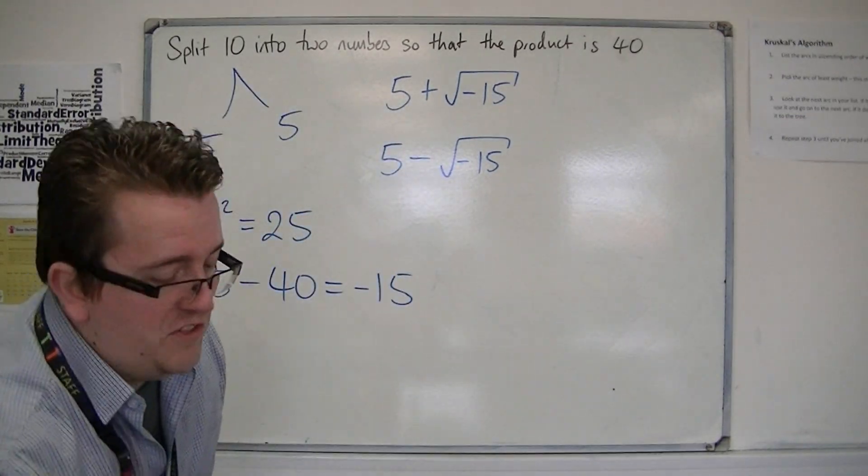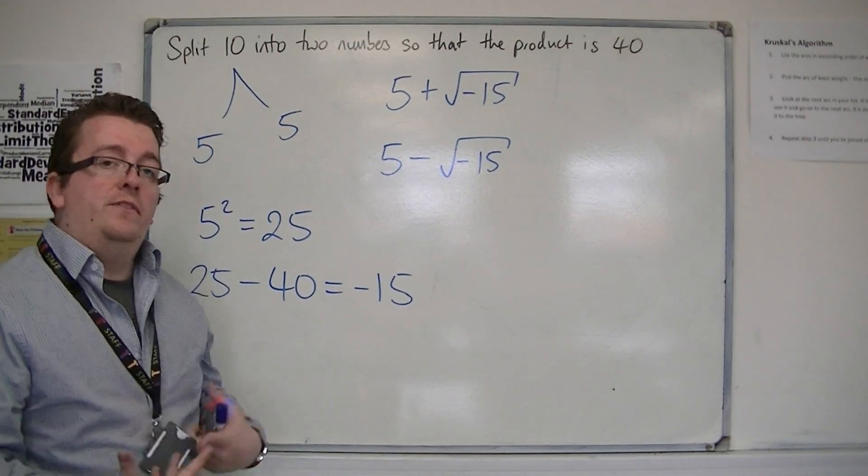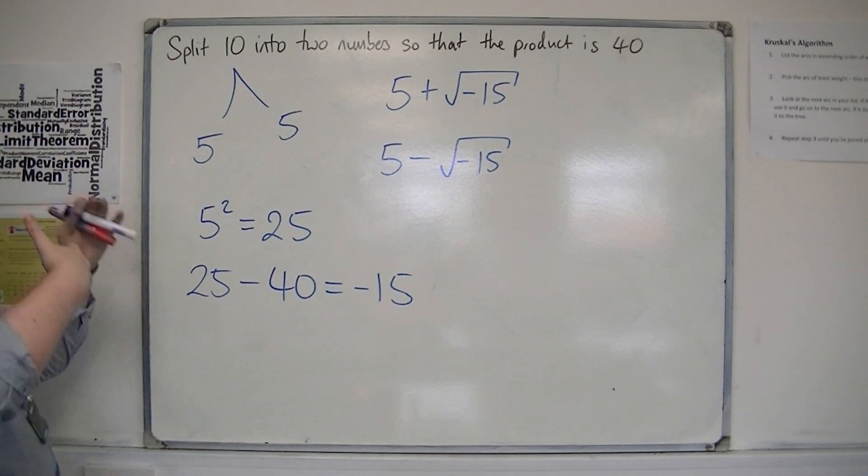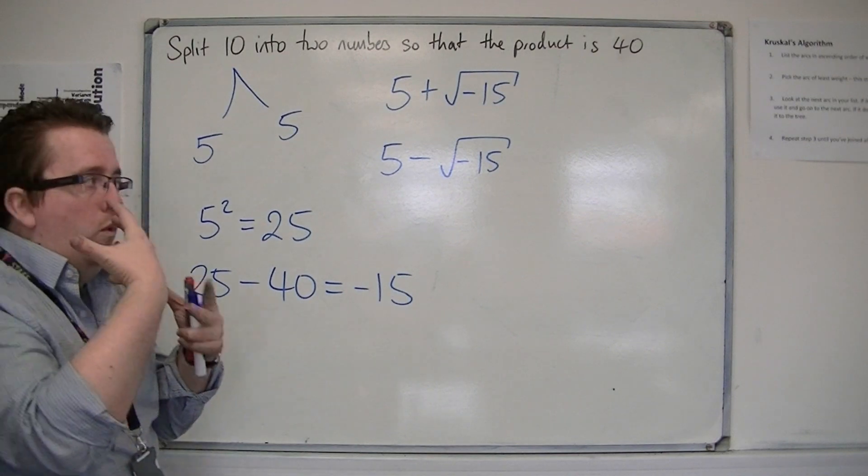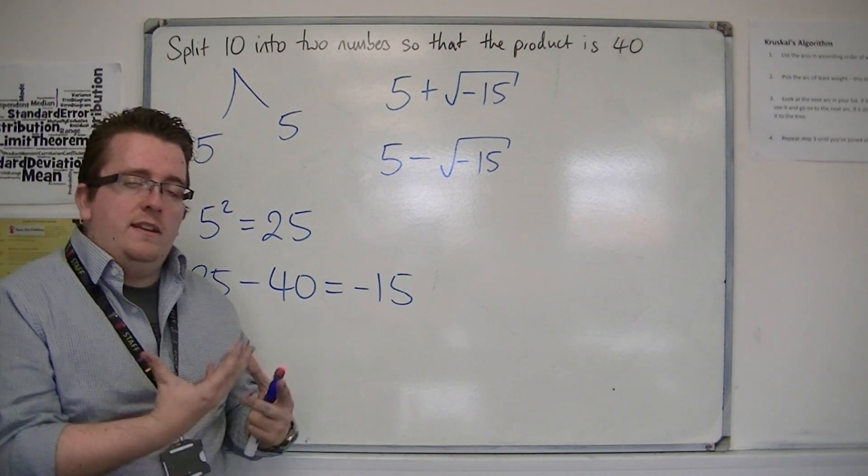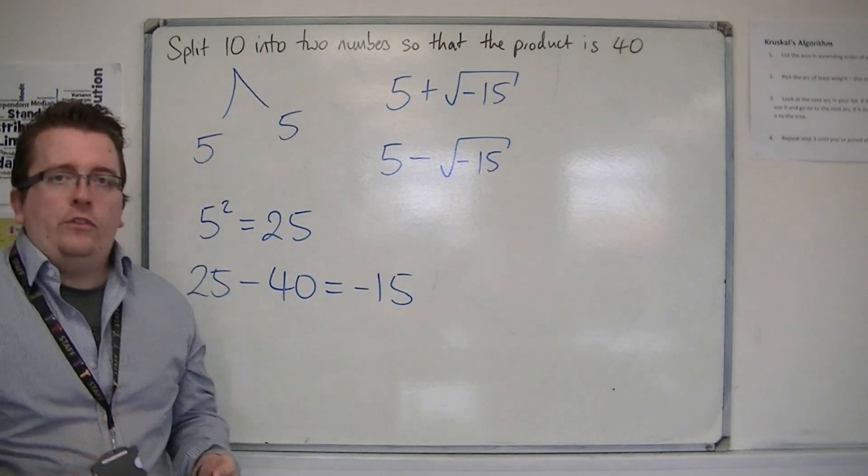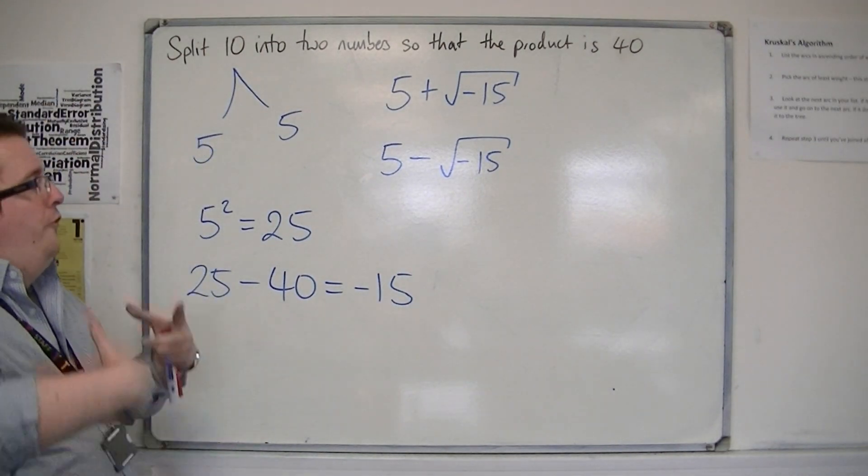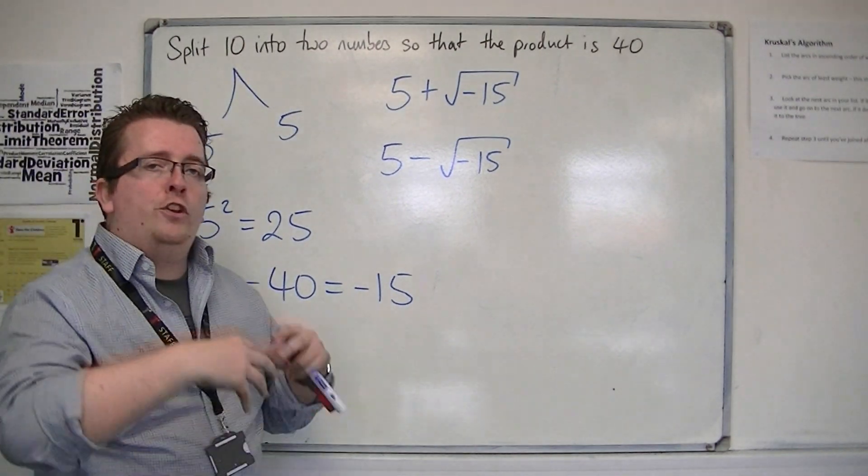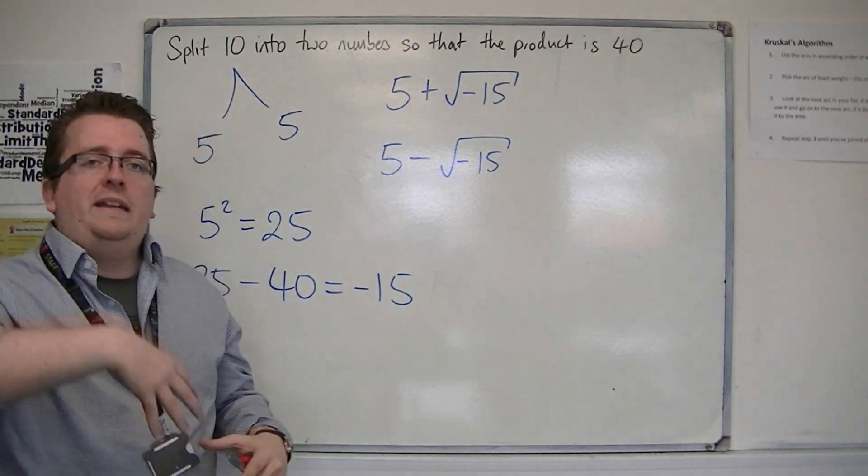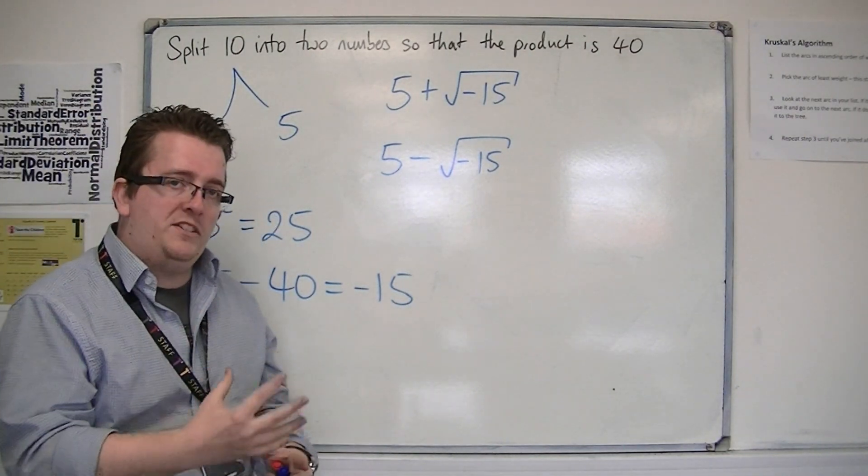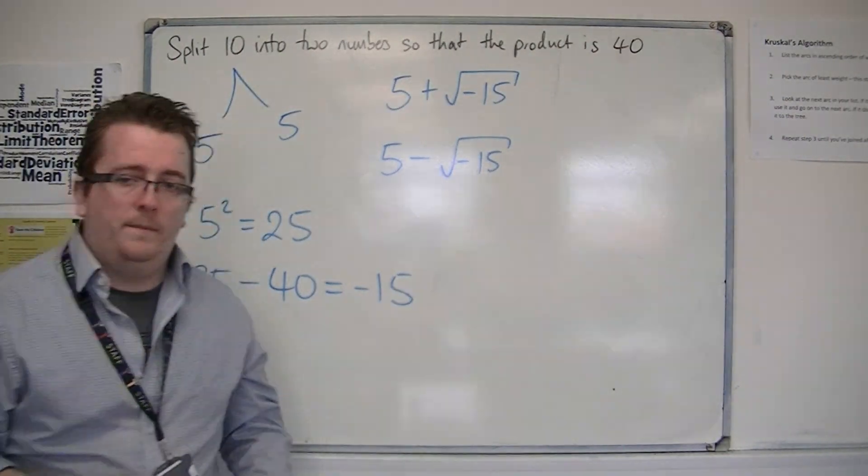So if there was a solution, this would be the solution, as Cardano would put it. But obviously we're not in the realm of square rooting negative numbers. That is the problem. So from this comes the idea of complex numbers. And in the next video, I'm going to introduce how we form complex numbers and what they really mean.